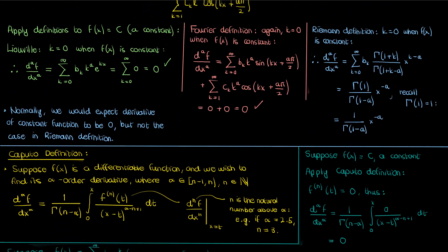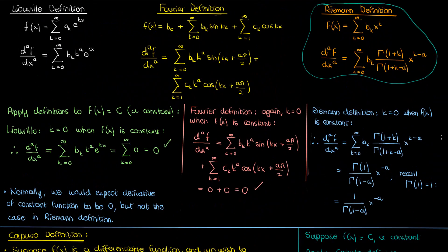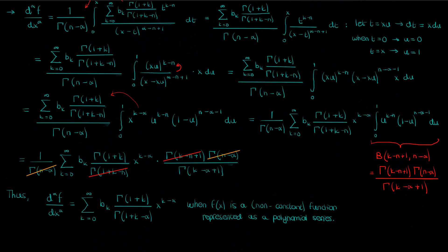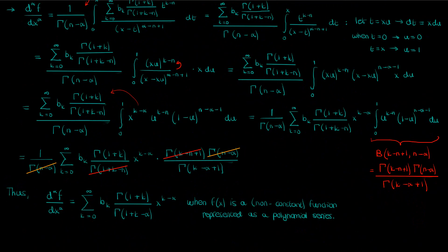This expression happens to be exactly the same as the Riemann definition of the fractional derivative. So the Caputo definition is pretty great: you get consistency with the Riemann definition as far as polynomial derivatives are concerned, and you also have the added benefit of ensuring that the Caputo fractional derivative of a constant is zero, which should make intuitive mathematical sense. We've shown that for the same function, fractional derivatives can be different depending on the definition used, just as we saw for the constant function.